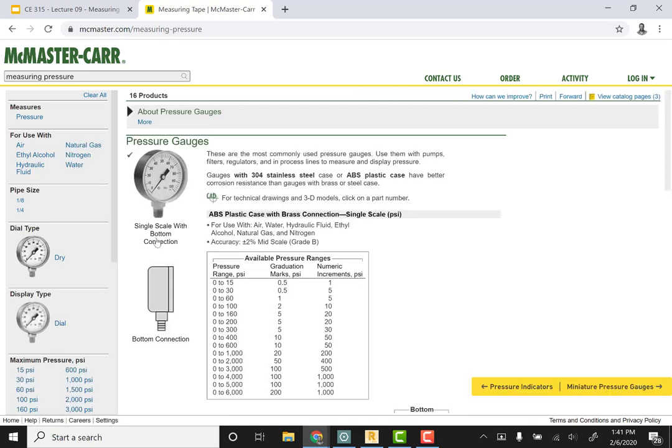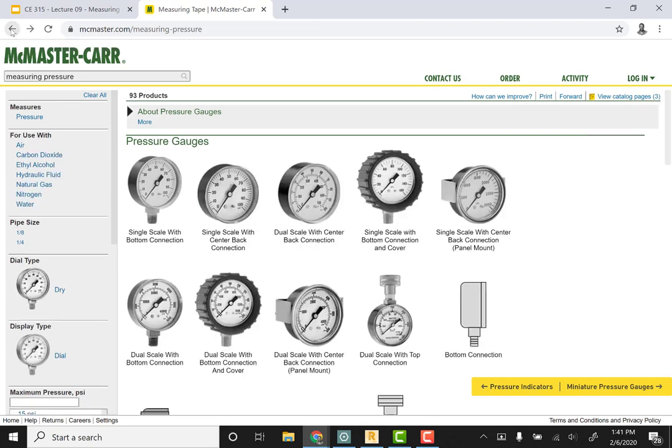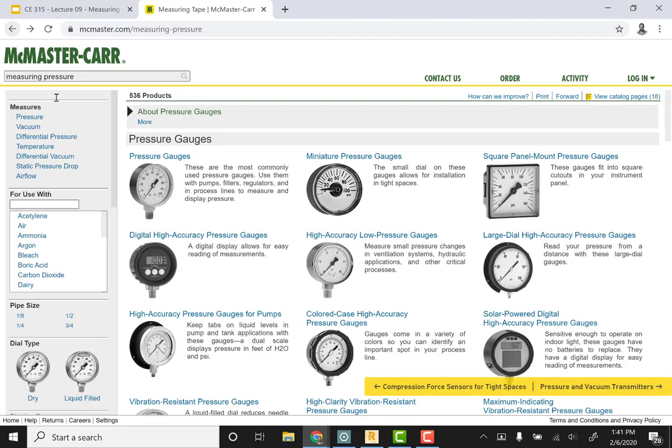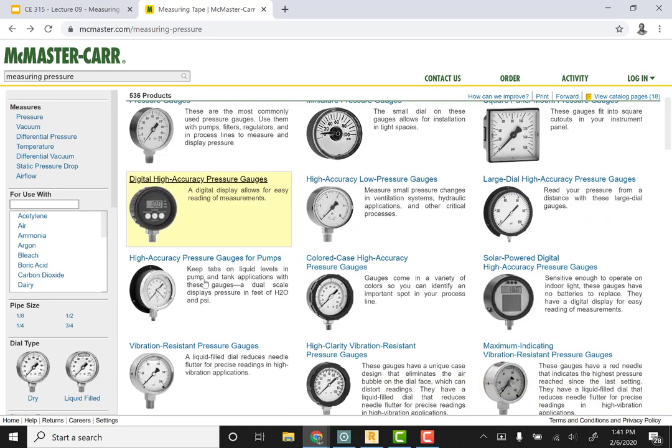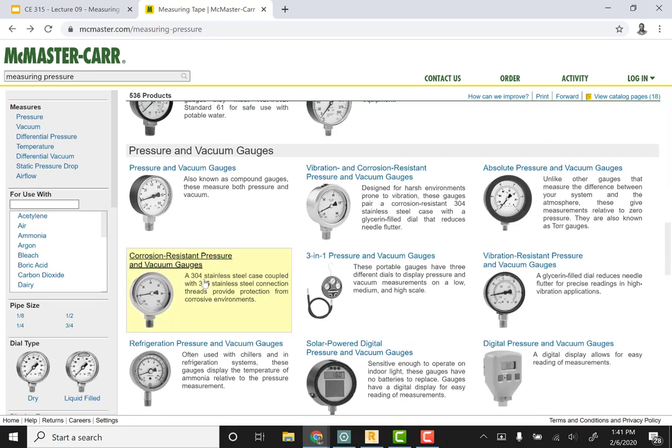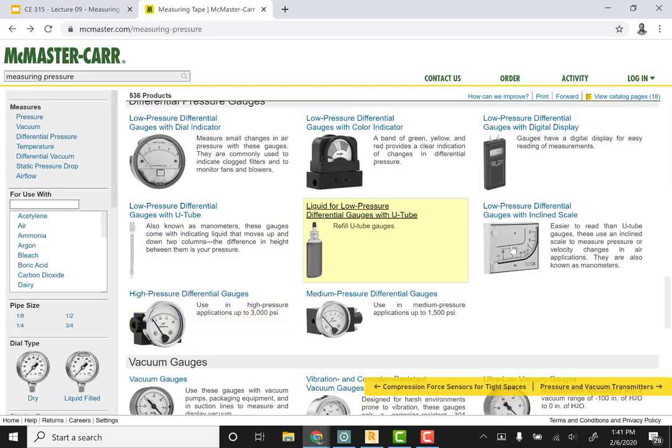Each of those pressure gauges, if we go into the details, will give us the pressure range. Some will also give environmental characteristics. If you're dealing with certain corrosive materials, there's certain gauges that are resilient to exposure for long periods of time. Some have digital accuracy. Scrolling down, you can see all different types of gauges. At the bottom we have a low pressure differential gauge with an inclined scale. By putting it on its side, we're allowing more resolution for certain pressure ranges.